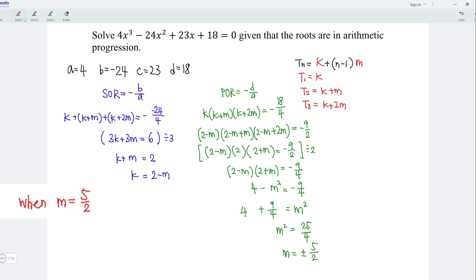Which means that K is equal to 2 minus 5 over 2. And we obtain negative 1 over 2.